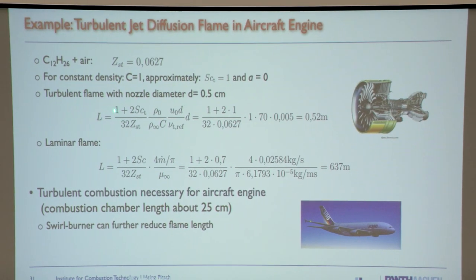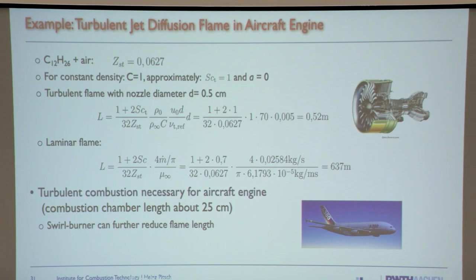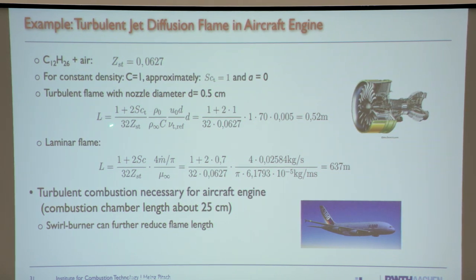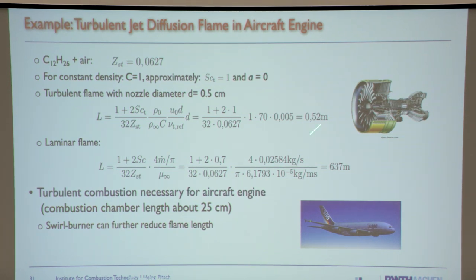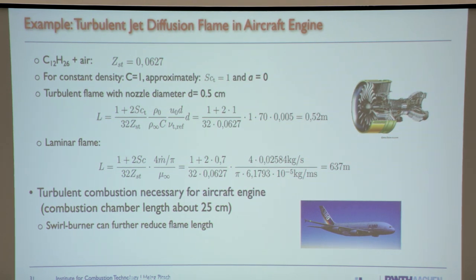We can use it to estimate how large an aircraft engine would need to be if it used laminar combustion. For a turbulent jet with dodecane as fuel and a 0.5 cm nozzle, I get a flame length of about half a meter. Doing the same calculation for the laminar case with the laminar formula, you get 640 meters.